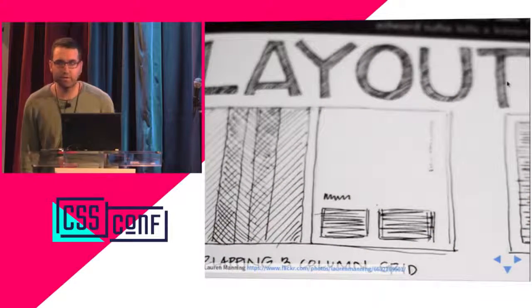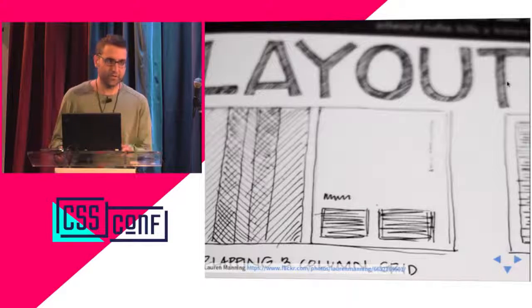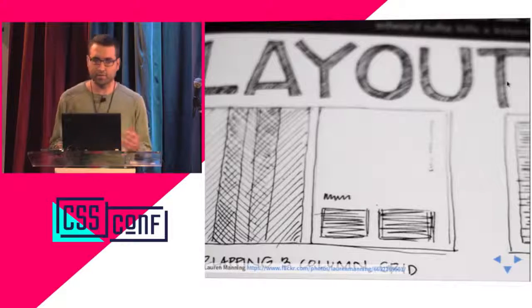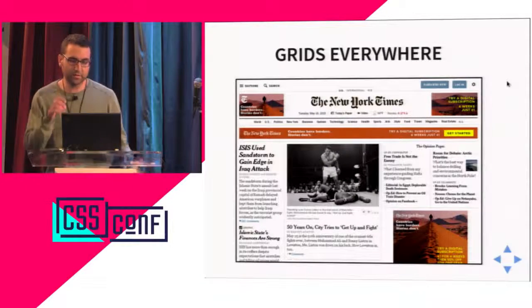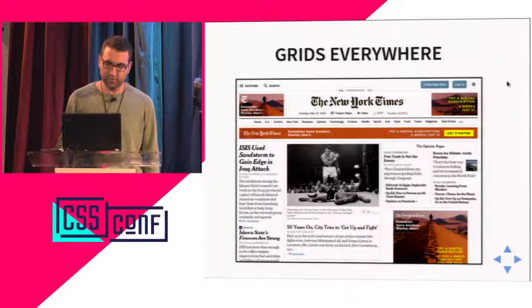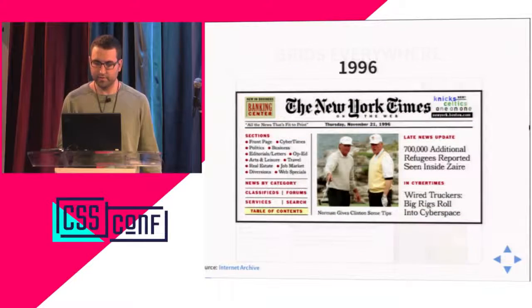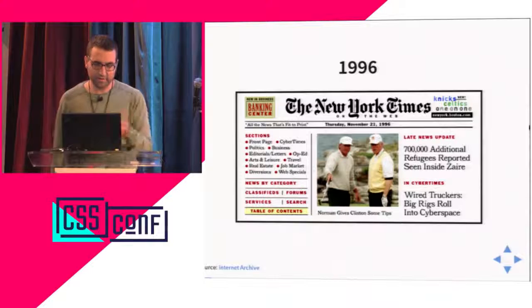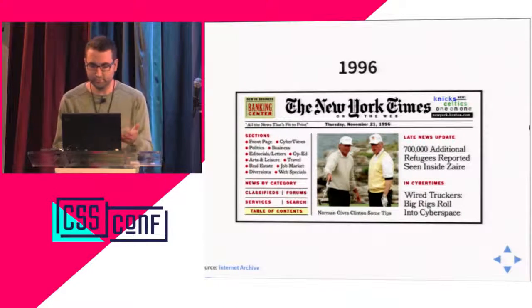We're going to talk about layout on the web. Most of you know that most websites are using some kind of grid layout. You usually have a header, you usually have a footer, maybe a column on the left or on the right. There are grids everywhere. The New York Times website is just one example — you have a footer, a column on the left. Grids have been there forever. If we go back in time to 1996, the New York Times website was already using a grid somehow, with some columns, some footer, some header.